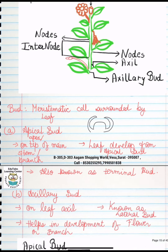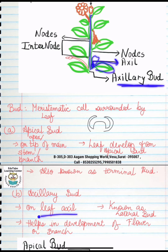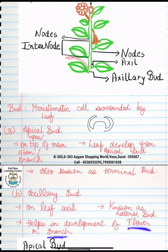Next is axillary bud. What happens in axillary bud? Suppose it is a stem — the area we call axillary: if it is an axillary bud, we call it axillary bud, or leaf axillary bud. This leads to flower and branch development. They also call it lateral bud.